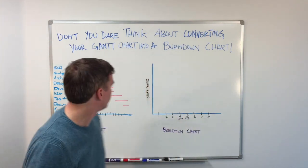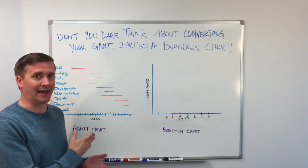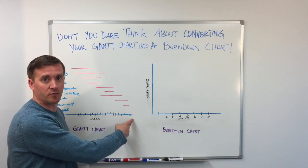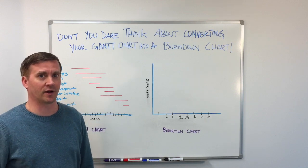So first of all, what are these two charts? On the left here, we have a Gantt chart. A Gantt chart is a way to measure progress towards a stated set of deliverables. They're very common in traditional project management.